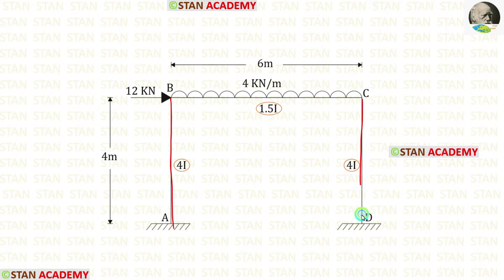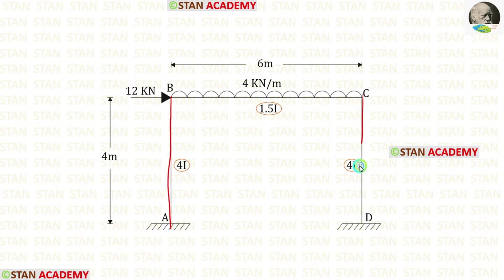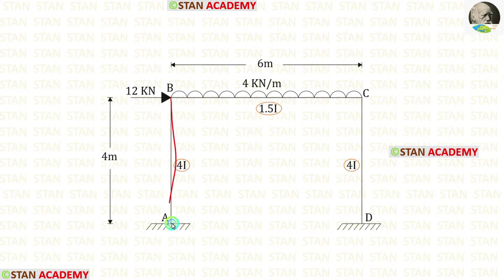In the columns, there are no loads. In the beam BC, we have a uniformly distributed load of 4 kN per meter, acting for the full span. In point B, we have a nodal point load of 12 kN acting towards the right side. For the columns, the moment of inertia is 4I, and for the beam, it is 1.5I. The height of the columns is 4 meters and the length of the beam is 6 meters.